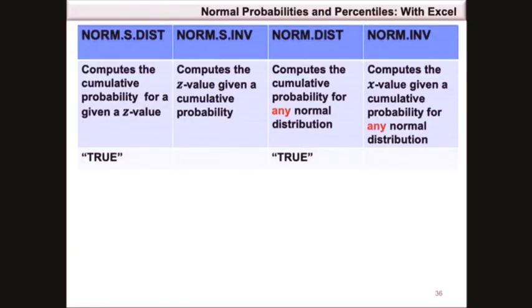Microsoft Excel provides four formulas for calculating normal probabilities and percentiles. norm.s.dist computes the cumulative probability for a given z value. norm.s.inv computes the z value given a cumulative probability. norm.dist computes the cumulative probability for any normal distribution, whereas norm.inv computes the x value given a cumulative probability for any normal distribution.